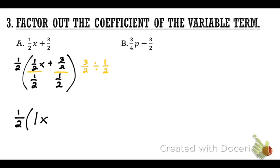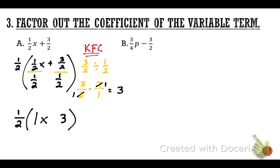Using KFC on 3/2 divided by ½: keep the first, flip the second, change the operation. Cross-reduce — the 2s become 1, and when you multiply out you get 3. Since we were adding, we continue to add, so the final answer is ½(x + 3).